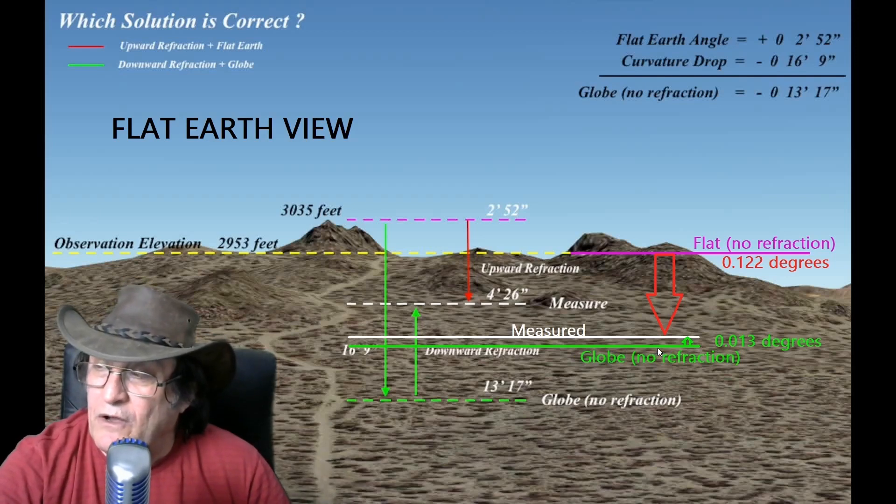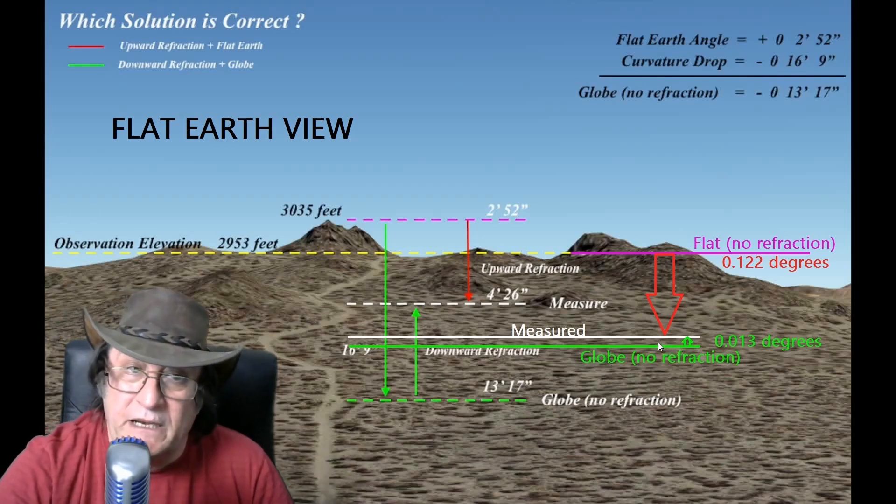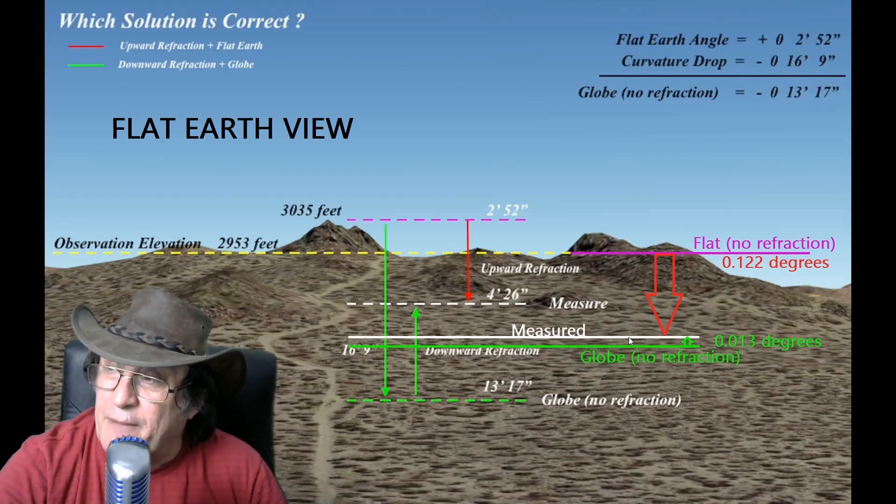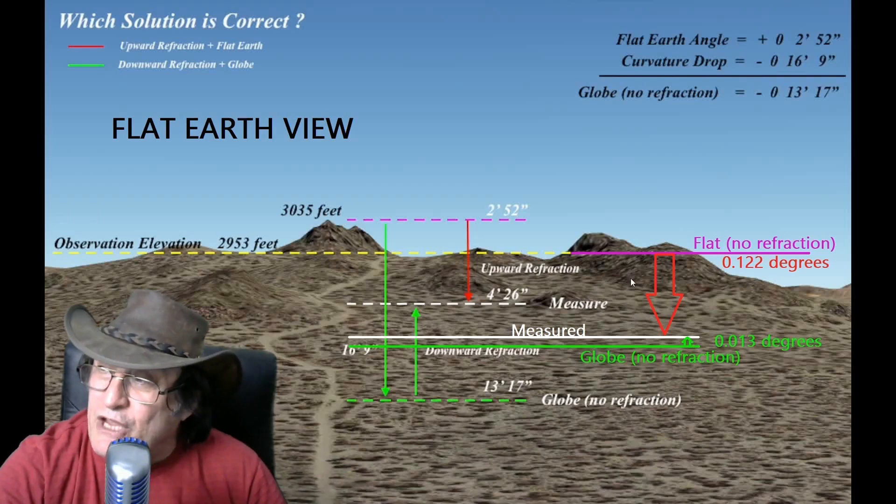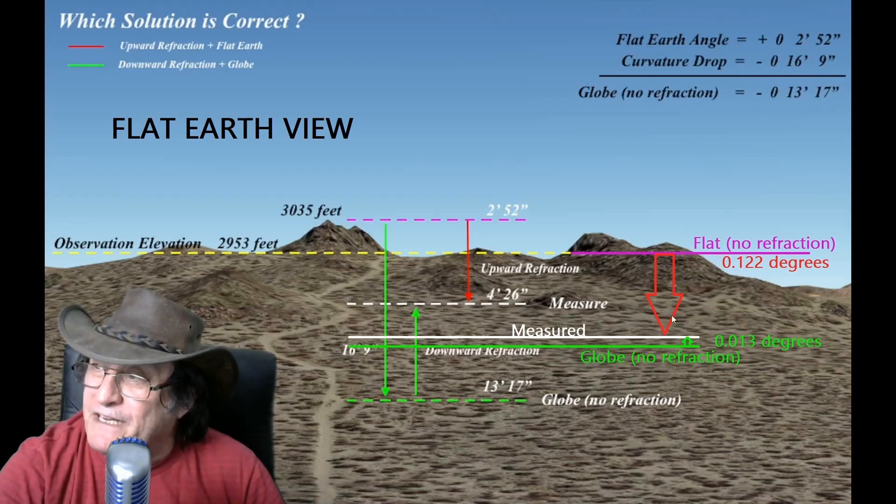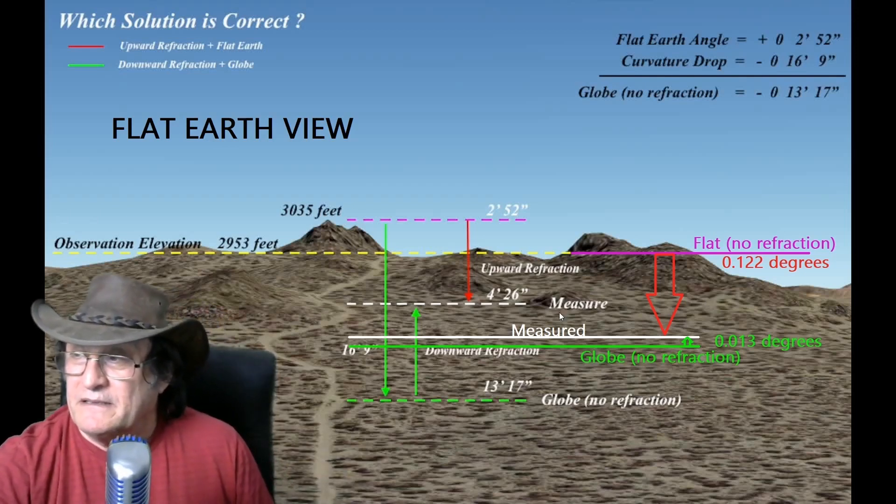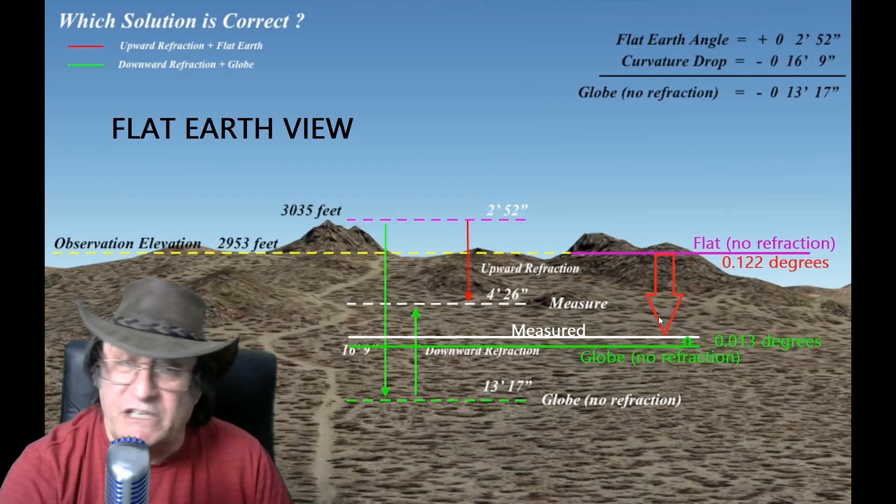Now, the green line is where the globe would be with no refraction. So, that is the geometric measurement. That is what we would see if there was no refraction. The top of that mountain would be down there. And as you can see, it's only a tiny little bit away. It only needs 0.013 degrees of refraction to bring it up to the measured. So, you'll see a little bit of downward refraction, or a humongous piece of upward refraction, which is actually not supported by the atmospheric conditions. So, you can see when you actually use the right numbers and don't try to deceive people, then the picture is a total different picture.